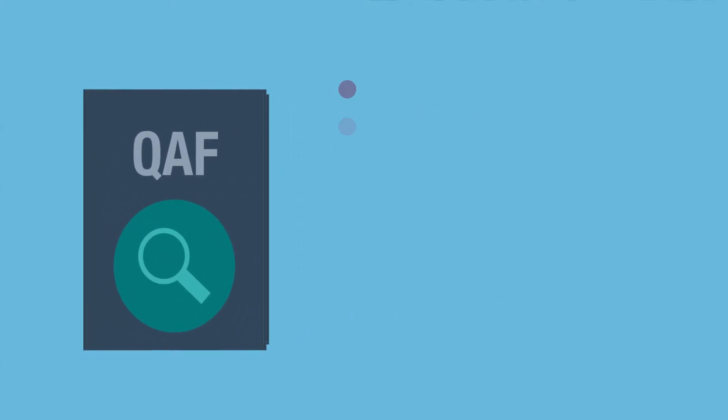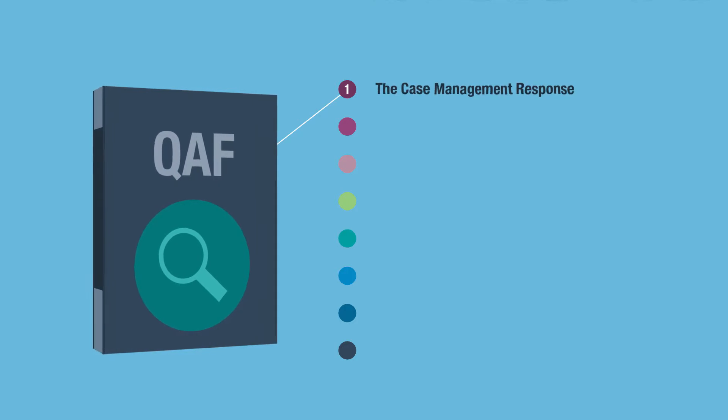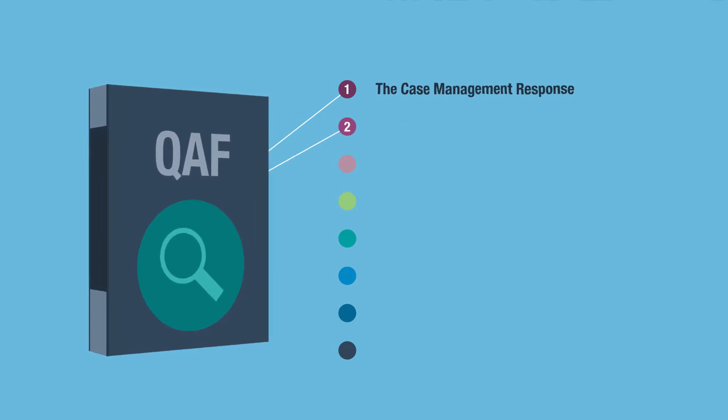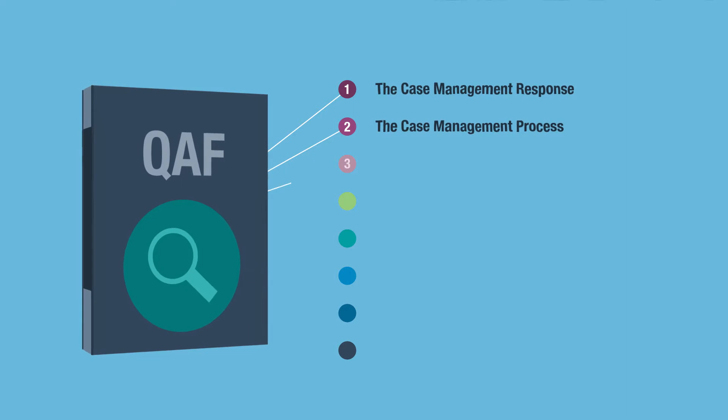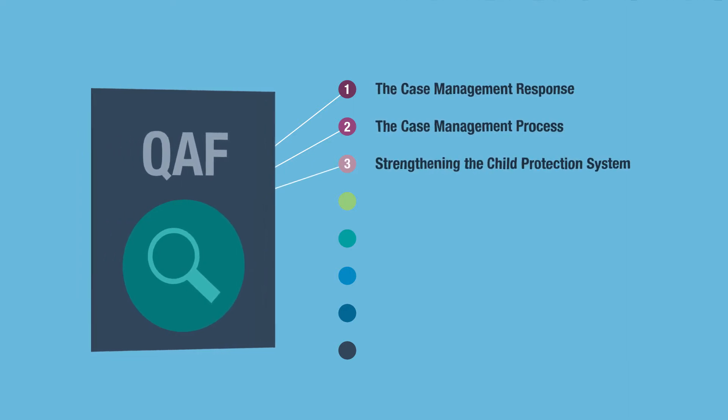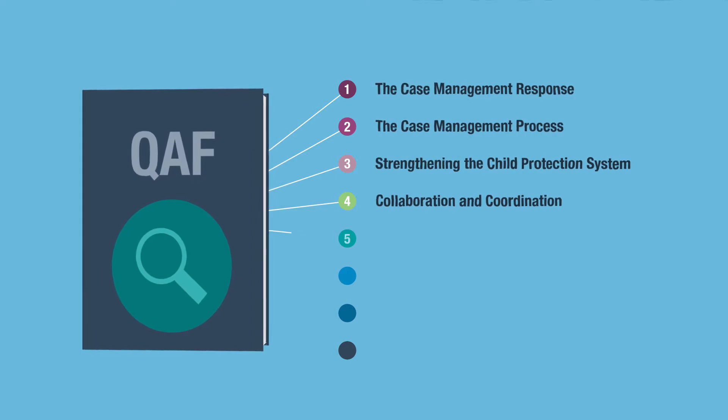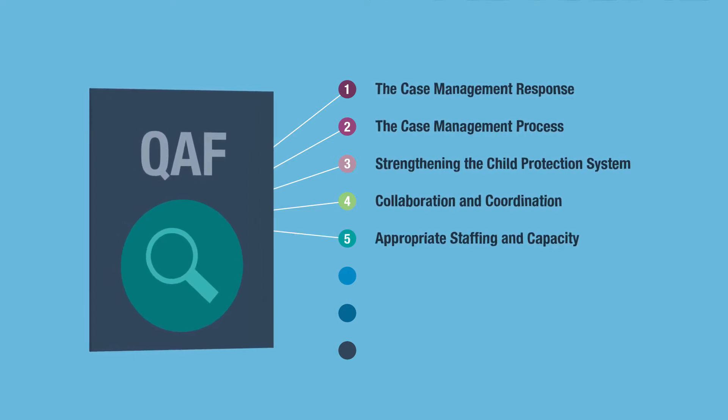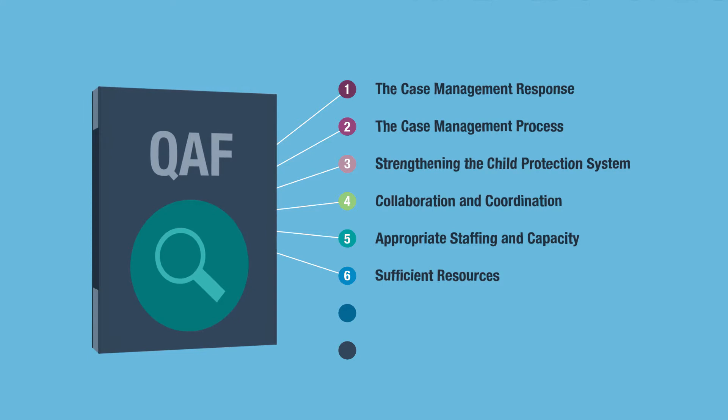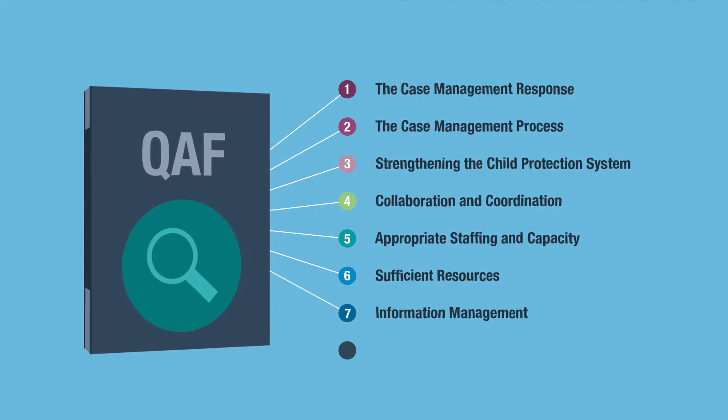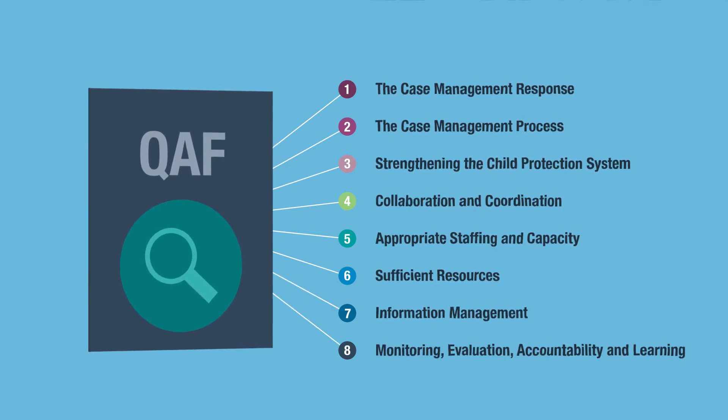The QAF assesses case management across eight main dimensions, including the case management response, the case management process, strengthening the child protection system, collaboration and coordination, appropriate staffing and capacity, sufficient resources, information management, monitoring, evaluation, accountability and learning.